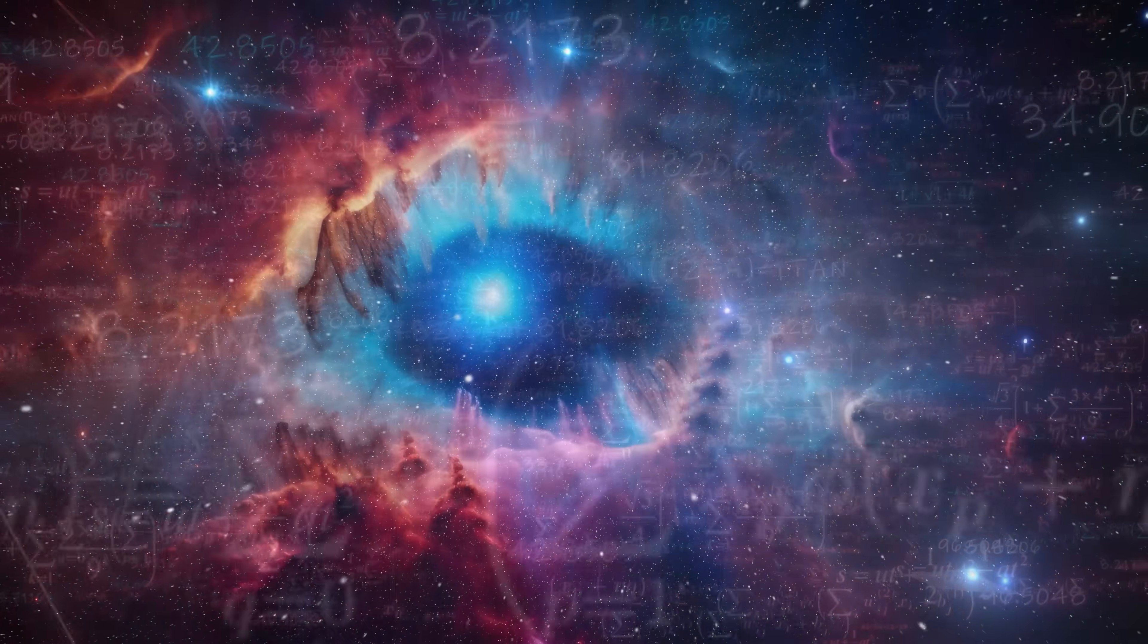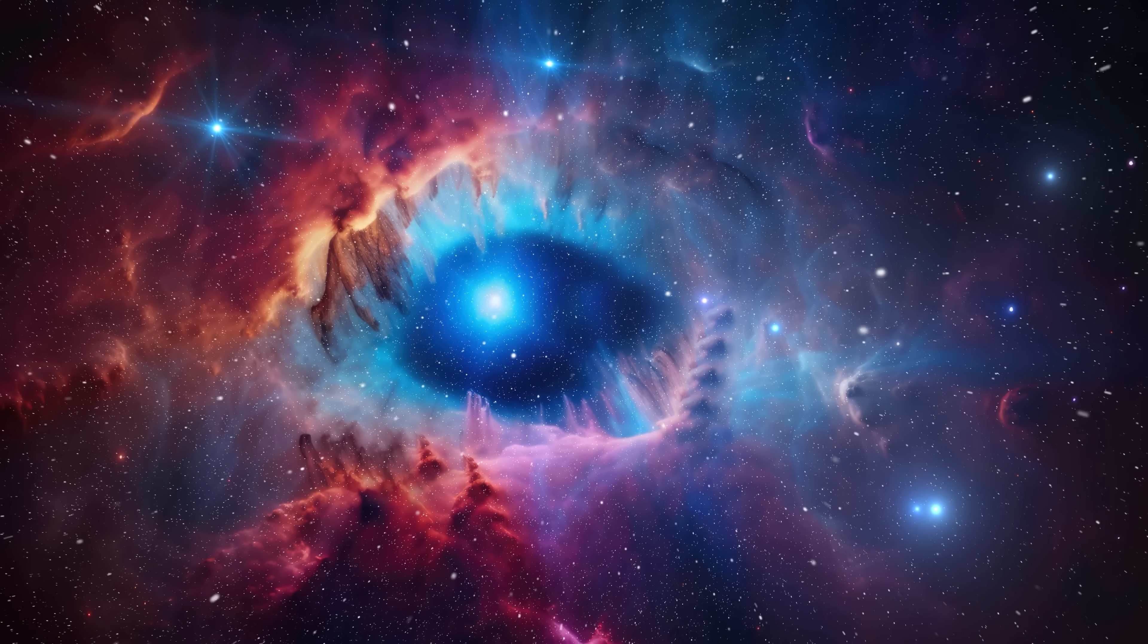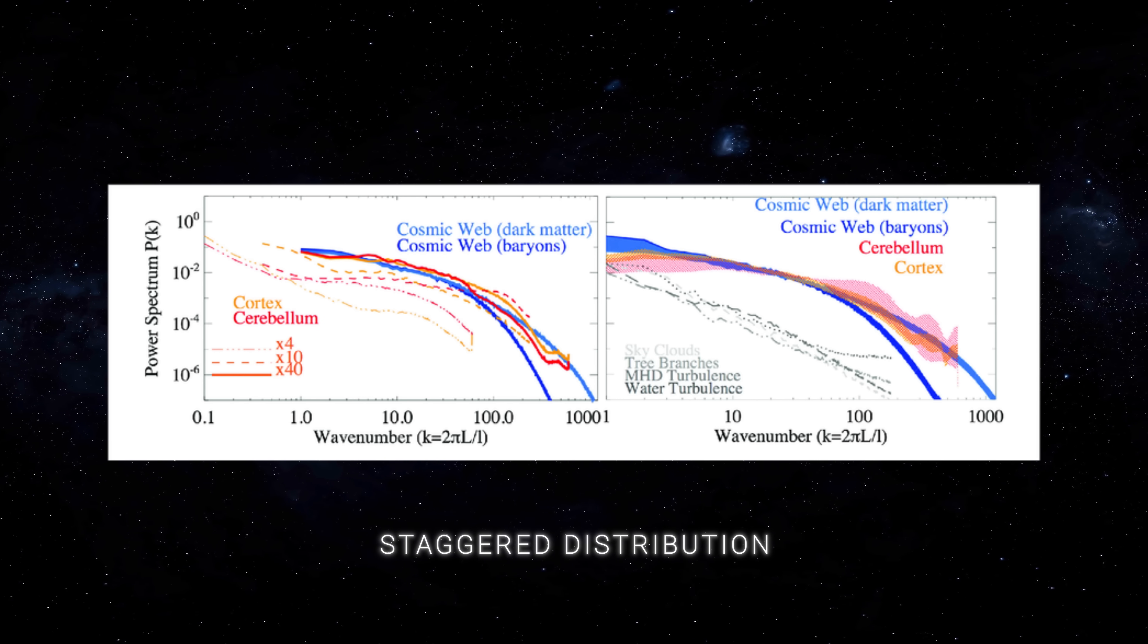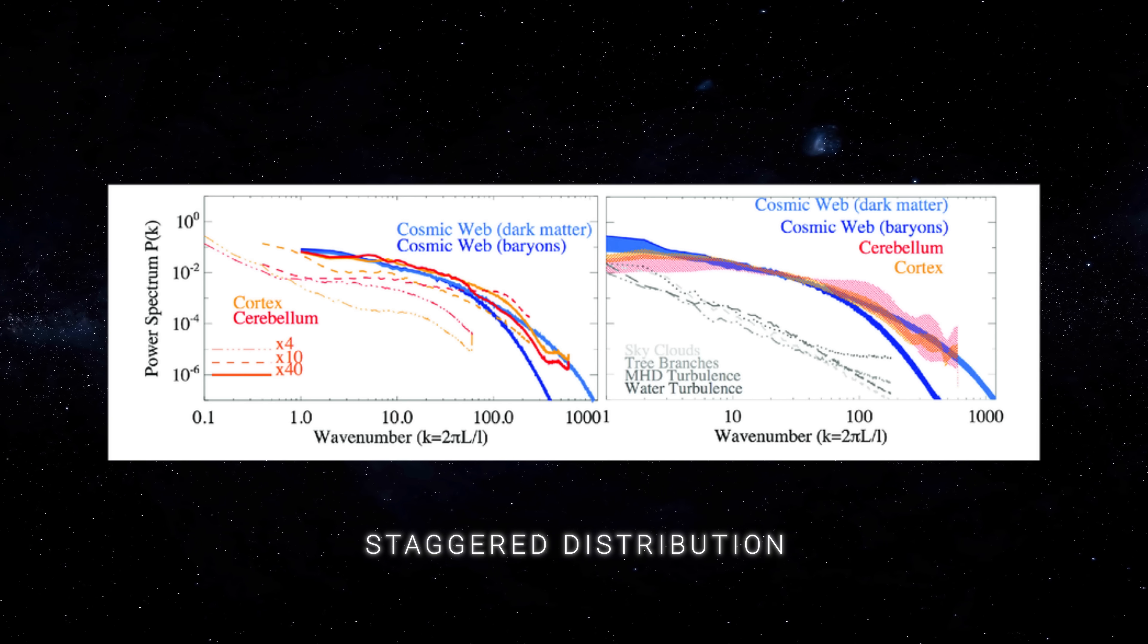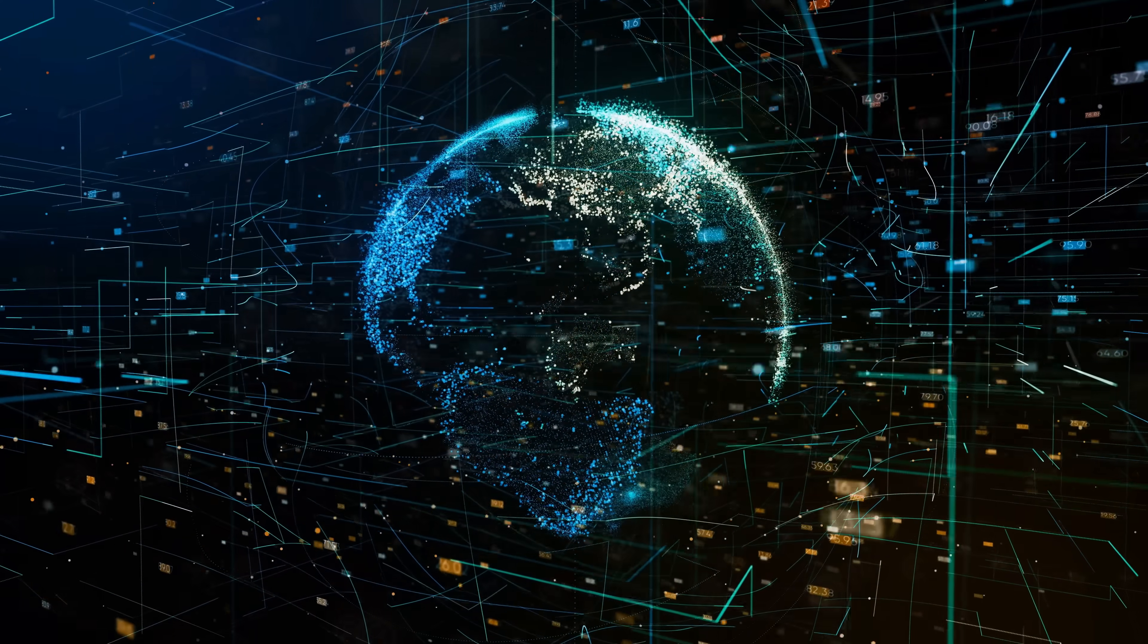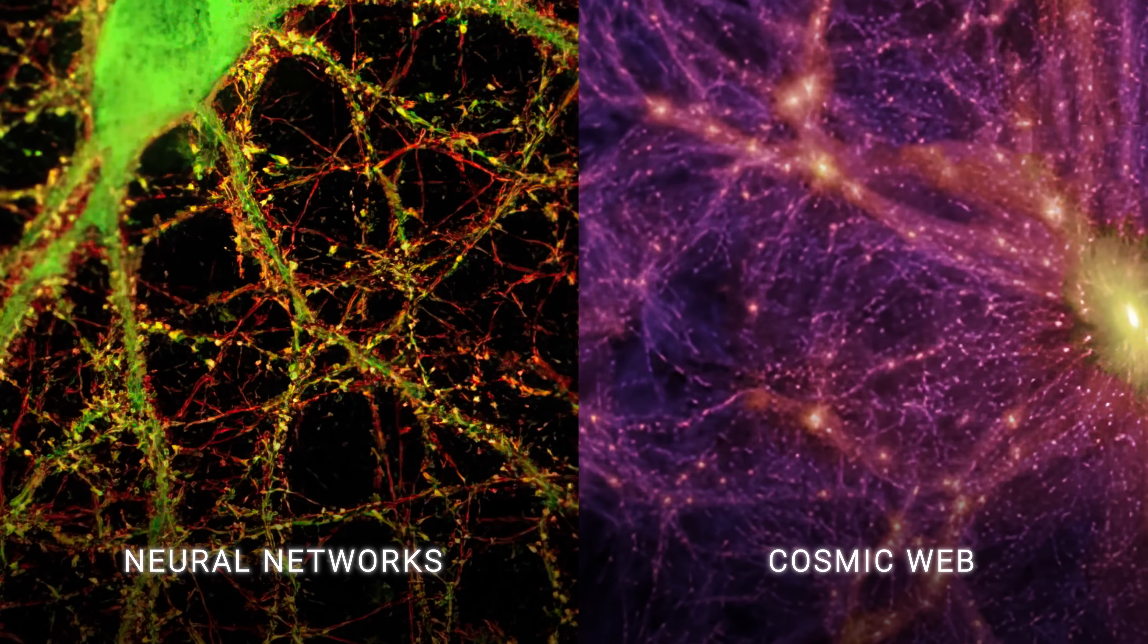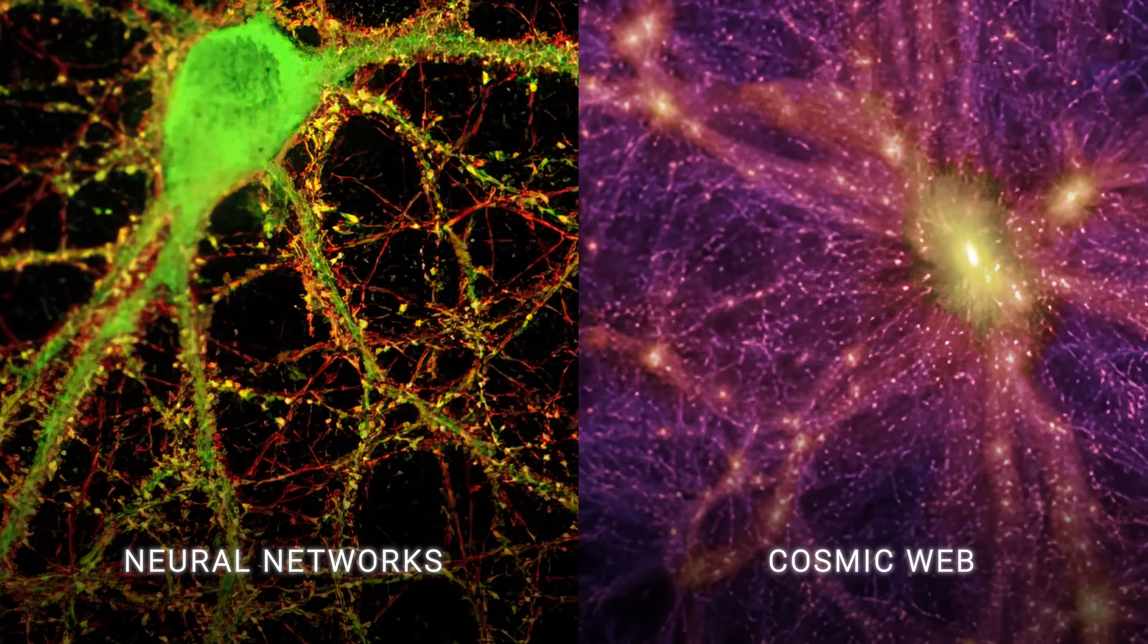By analyzing large data sets and applying advanced algorithms, they found that the structure of the universe and neural networks obey a similar pattern known as degree distribution. A staggered distribution is a mathematical relationship in which a small number of nodes have many links and most have only a few links. This pattern is found in a variety of natural phenomena, from the internet to social networks.